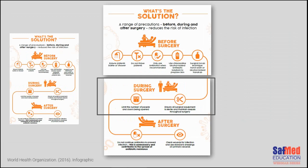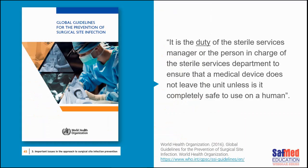Page two of the infographic talks about what the solutions are, divided into before surgery, during surgery, and after surgery. Before surgery: important factors like bathing, shaving, use of antibiotics, correct skin prep, correct scrub technique, and handwashing. During surgery: limiting the number of people in the operating room, limiting door openings — a critical issue — and, of course, ensuring that medical devices and instruments are sterile. That's what we're here to talk about today.